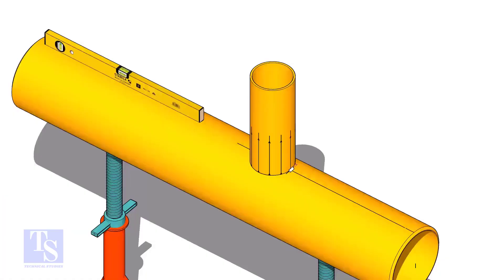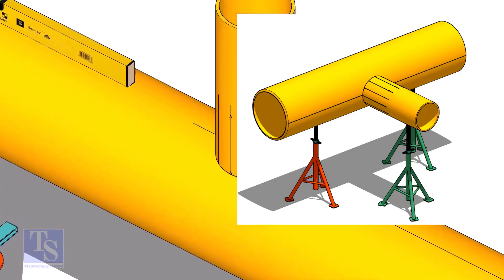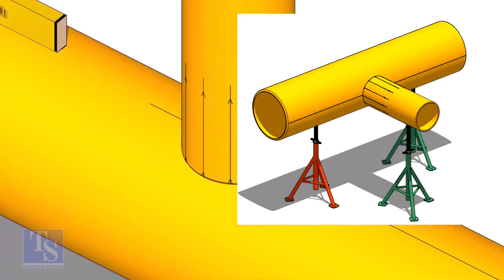Tack weld the branch on the header just to stand it vertically. If the pipes are large, you can do it in the horizontal position also.